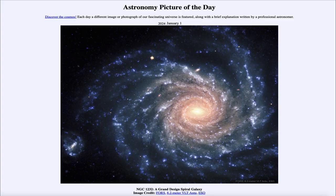Greetings and welcome to the astronomy picture of the day podcast. Today's picture for January 1st of 2024 is titled NGC 1232, a grand design spiral galaxy.